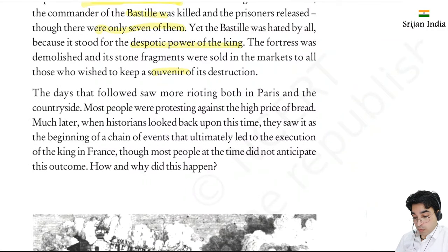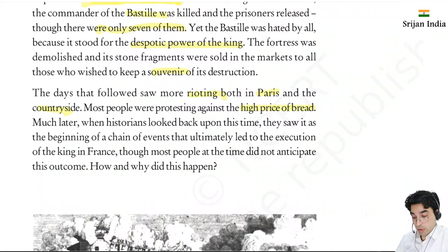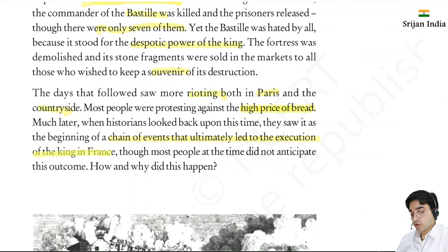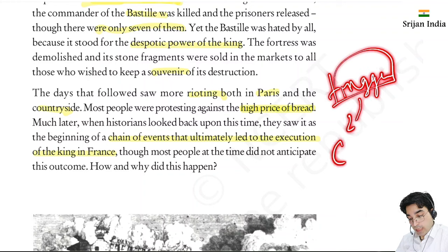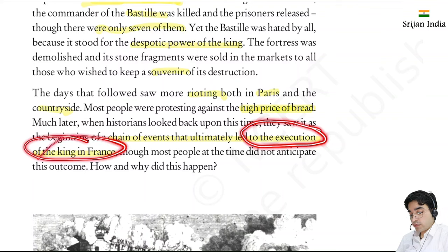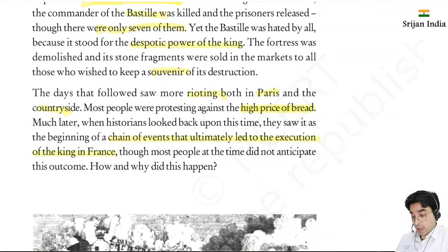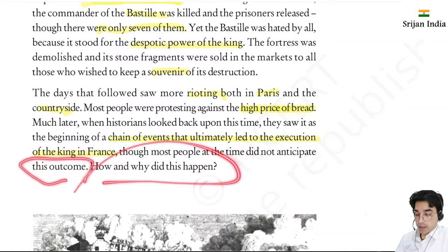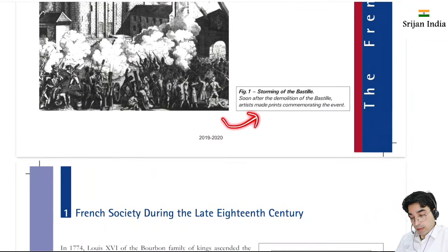In the days that followed, there was more rioting both in Paris and the countryside. Most people were protesting against the high price of bread. Later, historians looked back upon this time and saw it as the beginning of a chain of events that ultimately led to the execution of the king in France. One event triggered another in a chain reaction - first one event, then a second, third, and fourth - finally leading to the execution of the king.